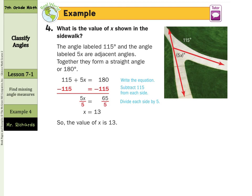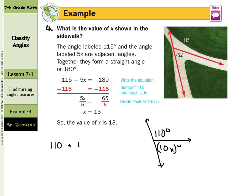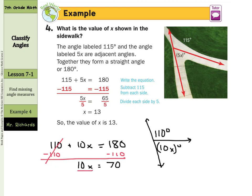Similarly, if we have 110° and 10x° that are adjacent and form a straight angle, we can say 110 + 10x = 180 degrees. Subtract 110 from both sides to get 10x = 70, then divide by 10 on both sides. That gives us x = 7.